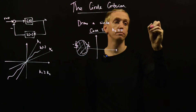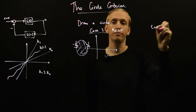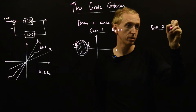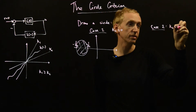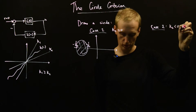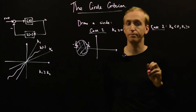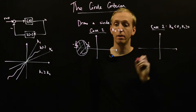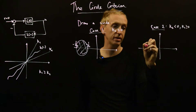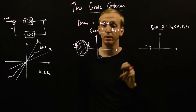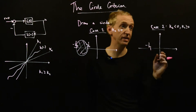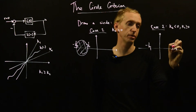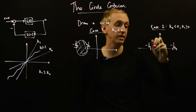Case 2 corresponds to k2 less than 0 and k1 greater than 0. Now we draw a circle differently — minus 1 over k1 stays in the same place, and we also draw the minus 1 over k2 point, but now it's going to be over on the other side because k2 is negative, and we draw a circle in the same way.